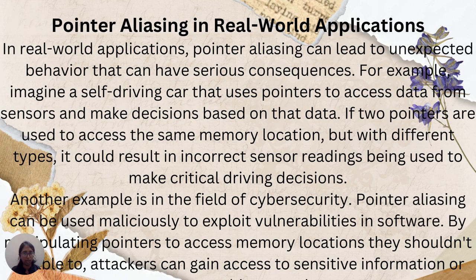Pointer Aliasing in Real-World Applications. In real-world applications, Pointer Aliasing can lead to unexpected behaviors that have serious consequences. For example, imagine a self-driving car that uses pointers to access data from sensors and make decisions based on that data. If two pointers are used to access the same memory location but with different types, it could result in incorrect sensor readings being used to make critical driving decisions. Another example is in the field of cybersecurity, where Pointer Aliasing can be used maliciously to exploit vulnerabilities in software. By manipulating pointers to access memory locations they shouldn't, attackers can gain access to sensitive information.